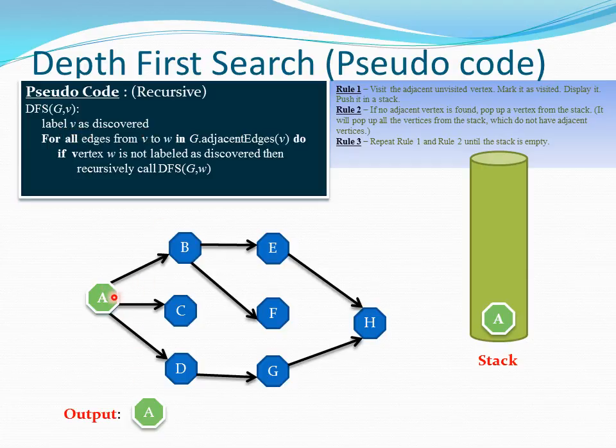Then we are doing this iteration for all edges from v to w in g, adjacent edges of v. We are iterating the children of A, the adjacent vertices. The first iteration we are going to visit is B.